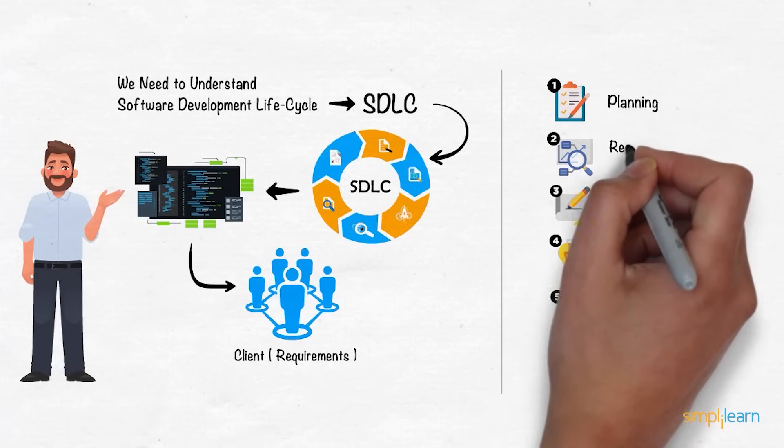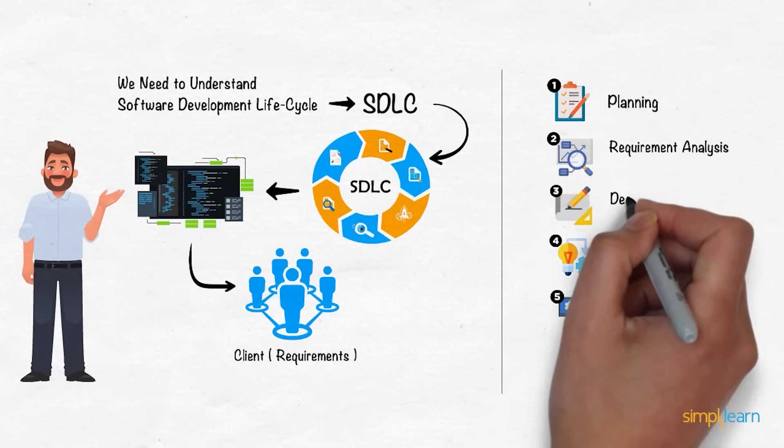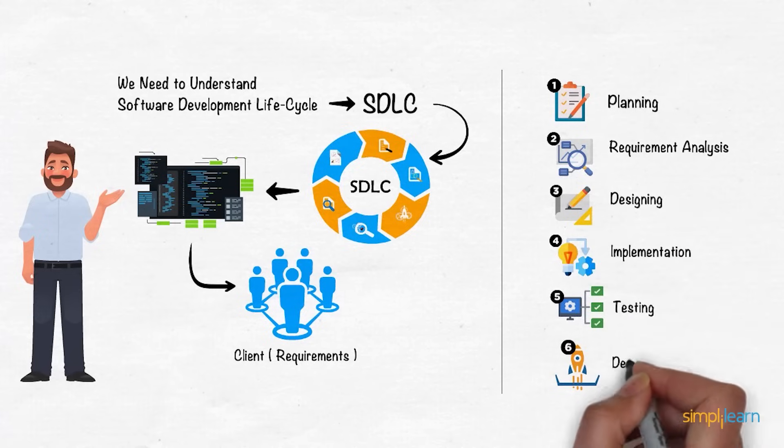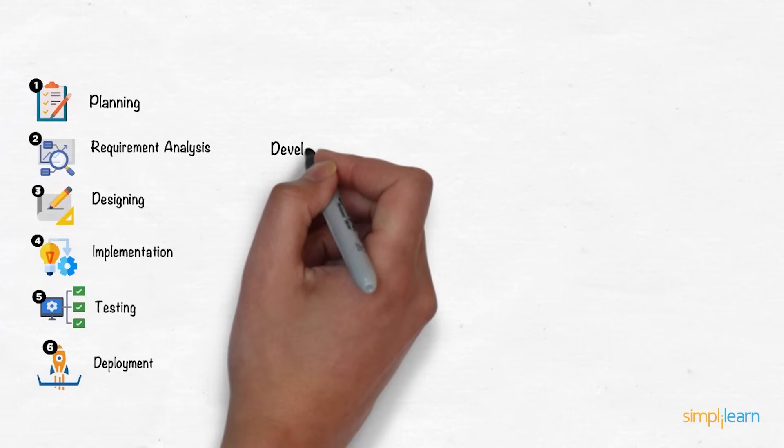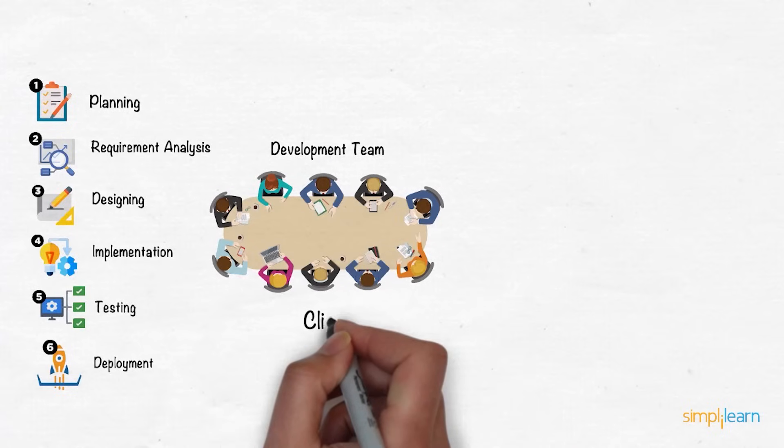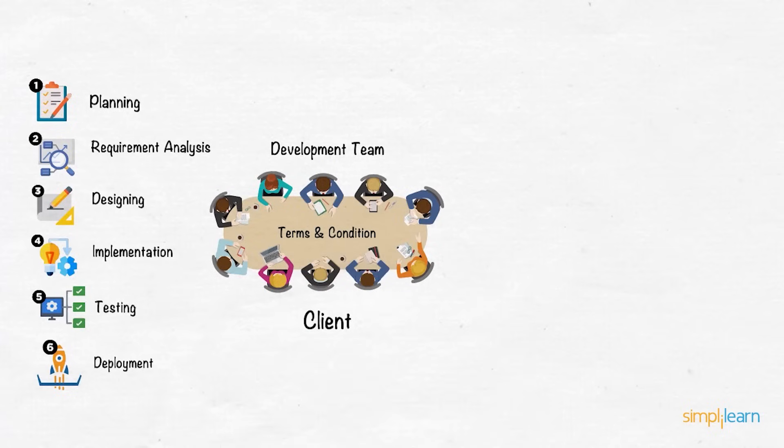Planning requirements phase, requirement analysis phase, designing phase, implementation phase, testing phase, deployment and maintenance phase. The development team will commence production after agreeing on the terms and conditions discussed between the client and the development team regarding all the proceedings and requirements.